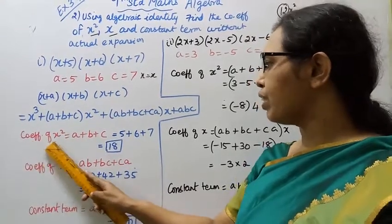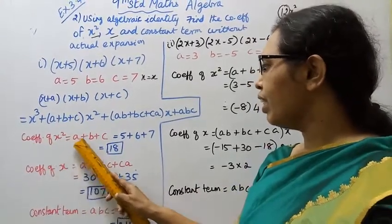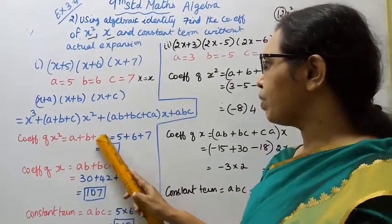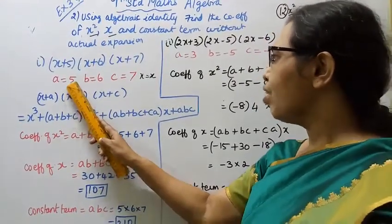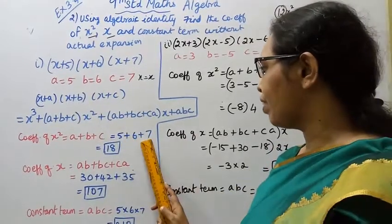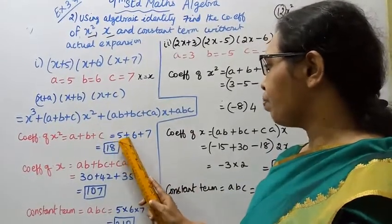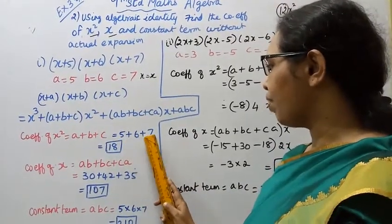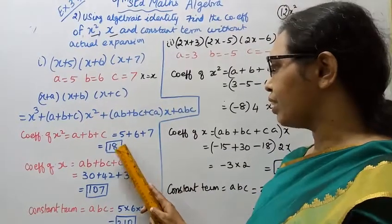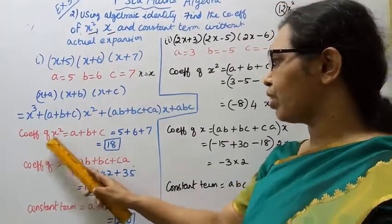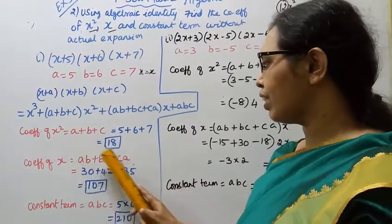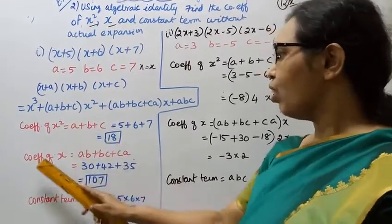Coefficient of x squared is a plus b plus c. Here a is 5, b is 6, c is 7. So 5 plus 6 is 11, and 11 plus 7 is 18. Therefore, coefficient of x squared is 18.